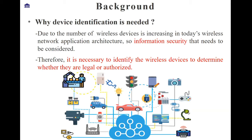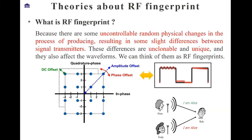Therefore, it is necessary to identify wireless devices to determine whether they are legal or authorized. The figure shows the distribution of wireless devices and sensors, which may include IoT networks. Of course, the number of devices will actually become more and more abundant.